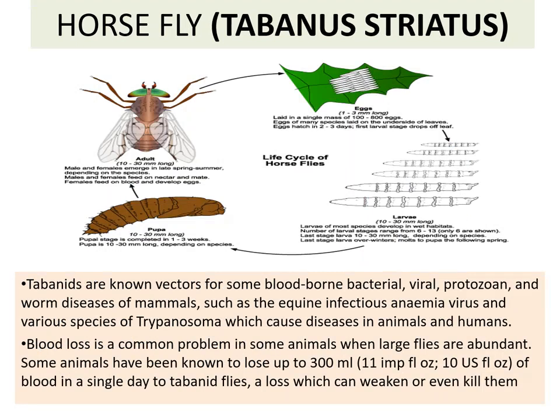Tabanids are known vectors for some blood-borne bacterial, viral, protozoan, and worm diseases of mammals, such as equine infectious anemia virus and various species of Trypanosoma, which causes disease in animals and humans. Blood loss is a common problem in some animals when large flies are abundant — some animals have been known to lose up to 300 ml of blood in a single day to a Tabanid fly, a loss which can weaken or even kill them.